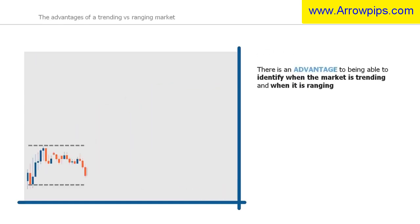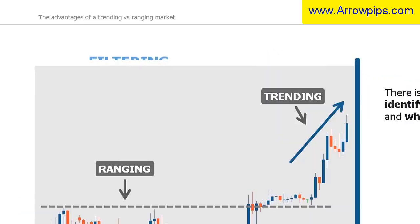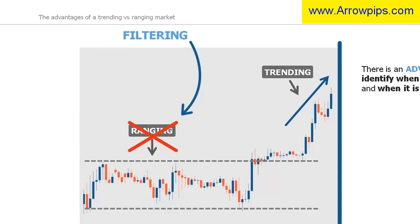There is an advantage to being able to identify when the market is trending and when it is ranging, because you can avoid ranging market conditions and reduce the likelihood of unprofitable trades by waiting for a price breakout. This is called filtering — a way of avoiding certain market conditions to avoid unprofitable trades. In this case, avoiding ranging markets.